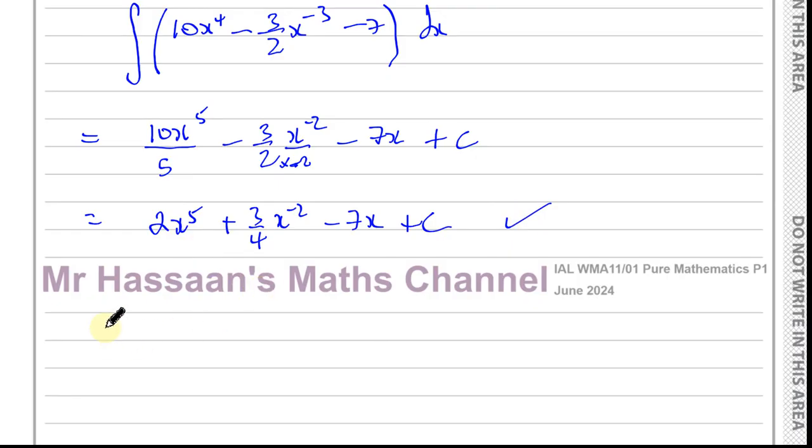You could also, if you want to, put 2x to the power of 5 plus 3 over 4x squared. You can rewrite that with the x in the denominator, minus 7x plus C. Both of those are perfectly fine ways of expressing your answer to this question.